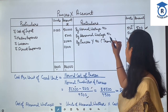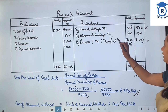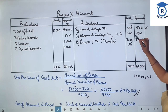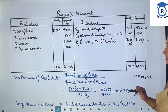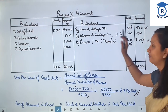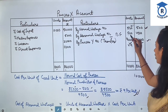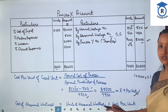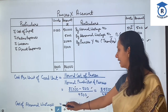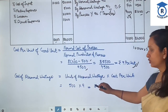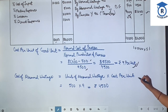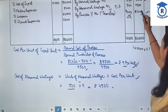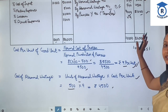Now when you total and balance, the balancing figure gives 500 units, which is the abnormal wastage. So abnormal wastage units have been found out. Now to find the amount, we apply the formula: cost of abnormal wastage = units of abnormal wastage multiplied by cost per unit. Cost per unit is 9 rupees and units are 500, so value comes to 4,500. This account is now complete.